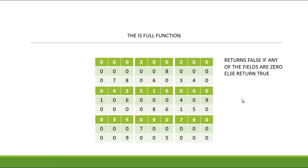Wherever there's a number, it's fixed and you cannot change those numbers in the solution. The first function we're going to address is the is_full function. As you can see, it returns false if any of the fields are zero, else it returns true. This means that if there are spaces still existing inside the board, you return false. If there is no space inside the board, you return true.